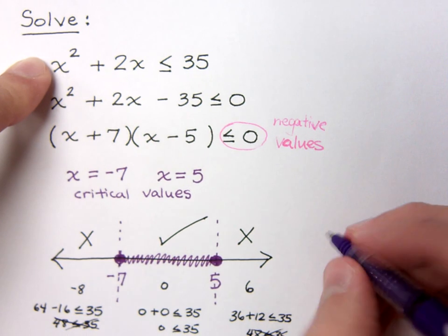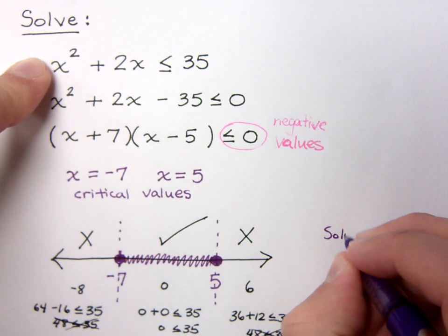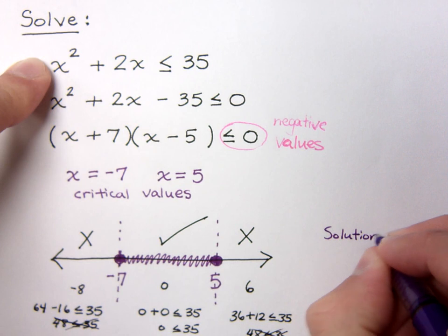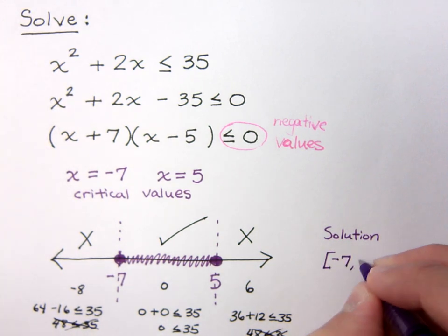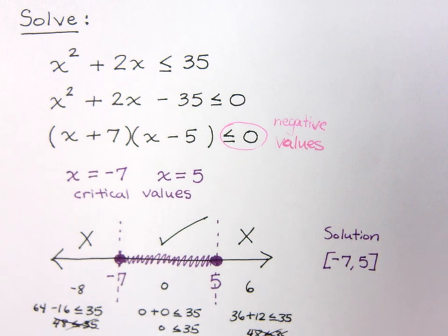So, my solution for this quadratic inequality is from negative 7 to positive 5, including both of those end values, negative 7 and 5.